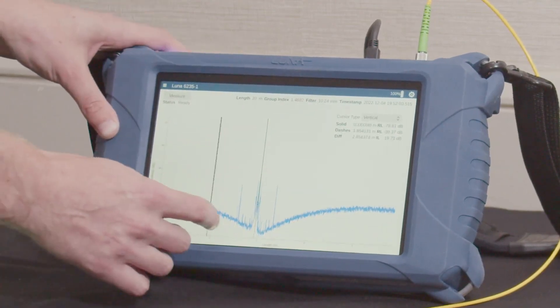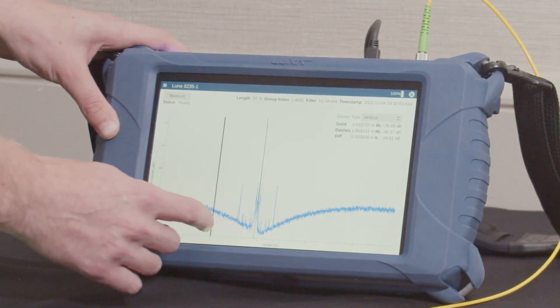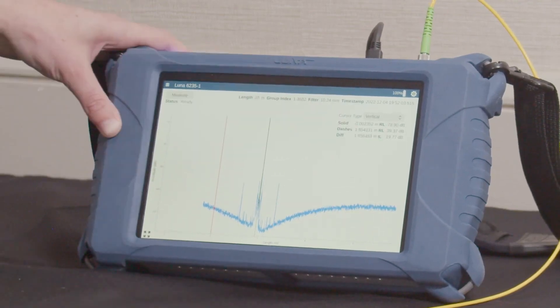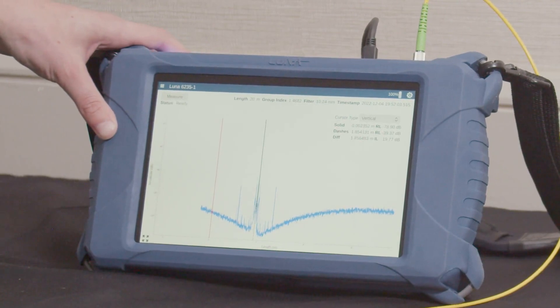So my red cursor here is showing up wherever I place it, and the green one, which I've snapped to that peak, shows up at exactly 1.8 meters. So you'll be able to know exactly where in your optical network you need to open it up and troubleshoot.